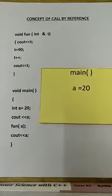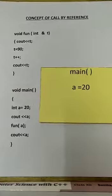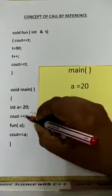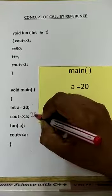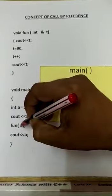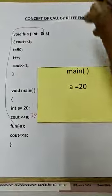The next statement is cout a. When this will be executed, 20 will be printed, that is the value of a. Now the function is called. When a function is called, the compiler is transferred from the calling to the code location.